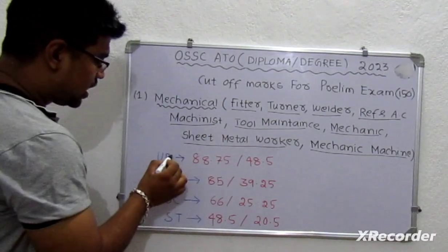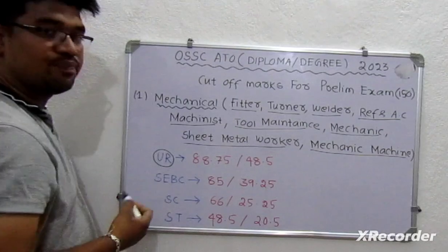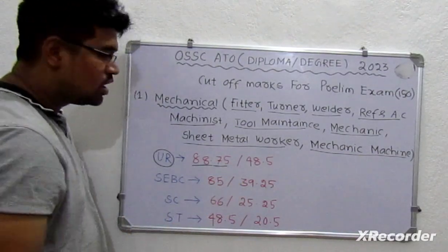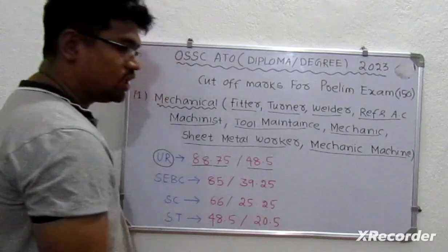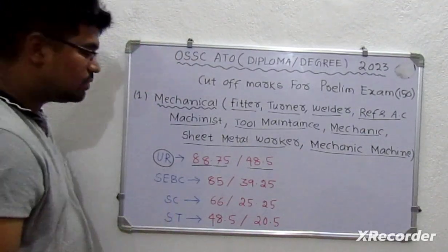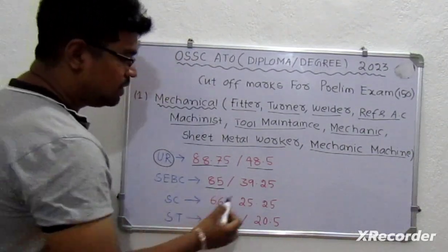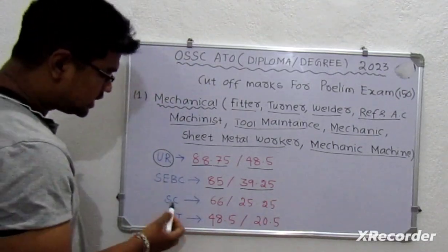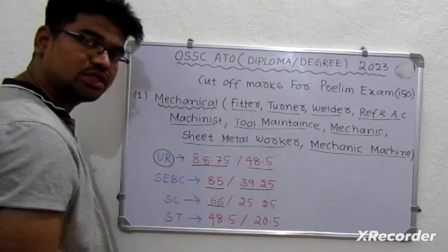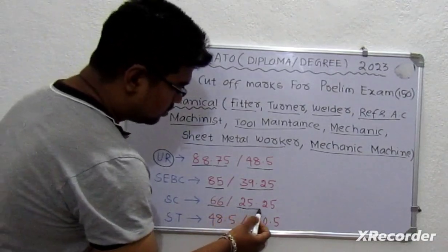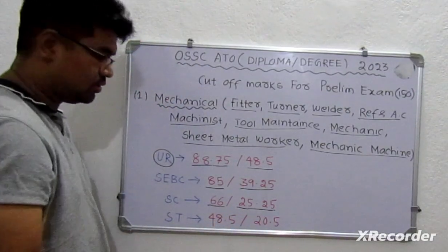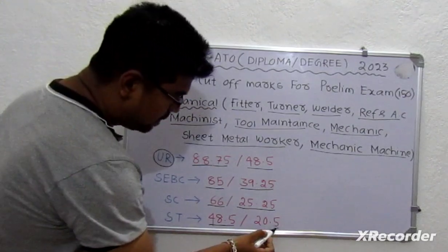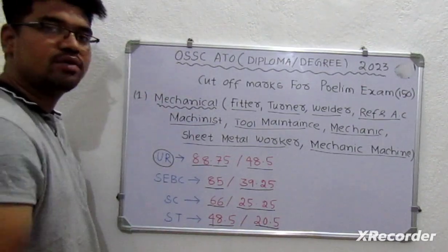So the UR category: for male candidates the cutoff is 88.75 and for female candidates it is 48.5. For the OBC category, the female cutoff is 66, and for female it is only 25.25. For the SC category, the male candidate cutoff is 20.5.